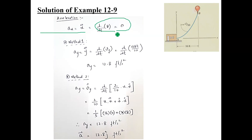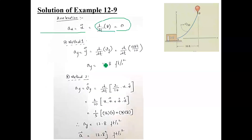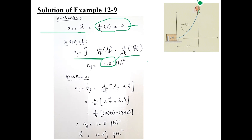For the y-component of acceleration, which is y-double-dot, we take the second derivative of y with respect to time. Using Method 1: y-dot was 128t/10. Differentiating once more gives ay = 128/10 = 12.8 ft/s². So ax = 0 and ay = 12.8, making the acceleration vector equal to 12.8j ft/s². At this instant there is one component of acceleration directed along the y-axis.